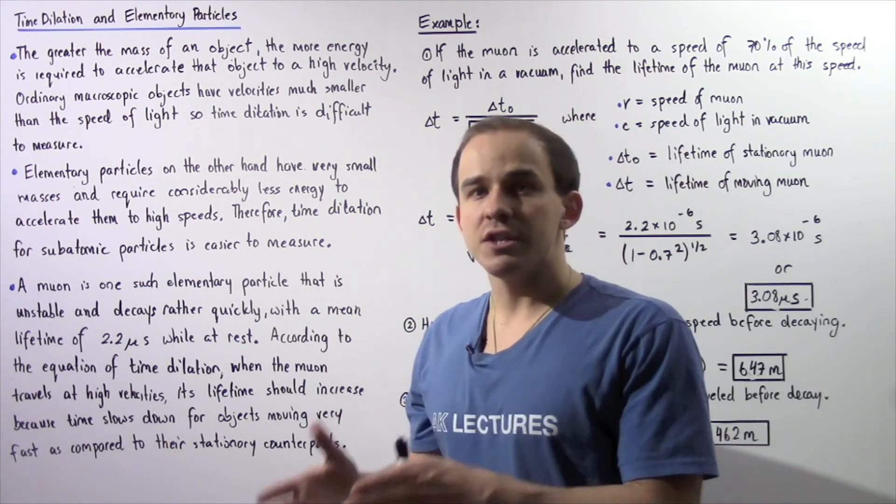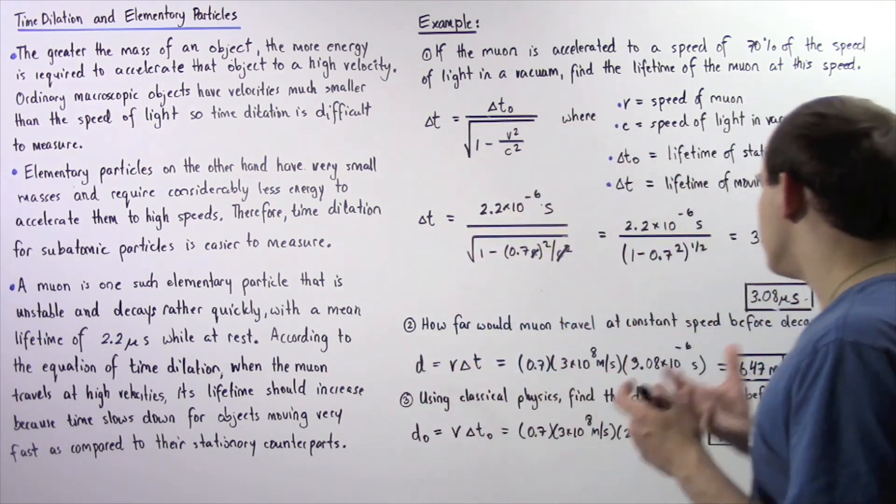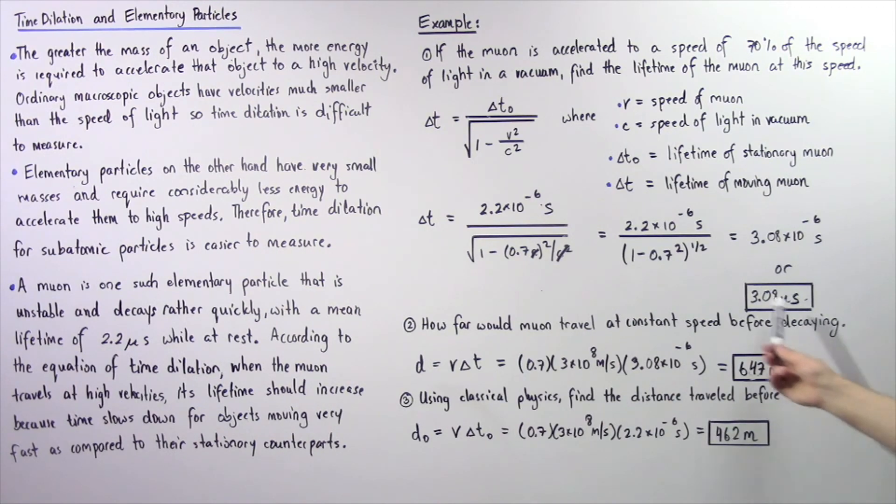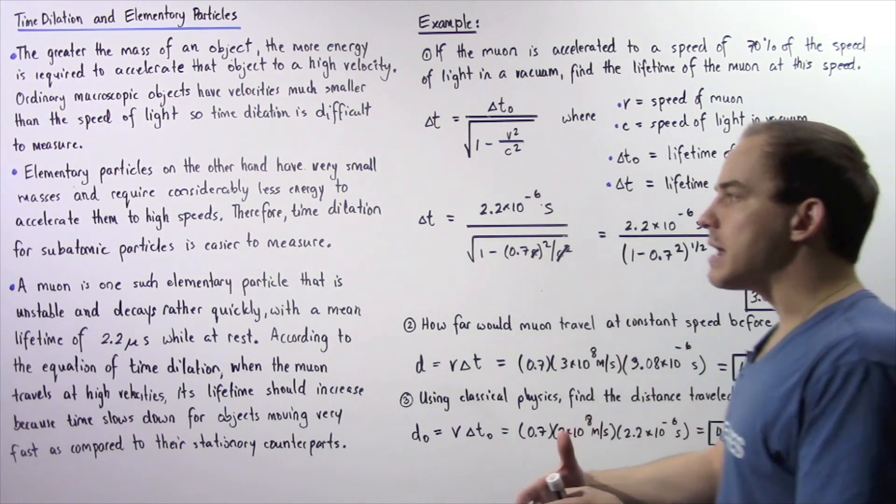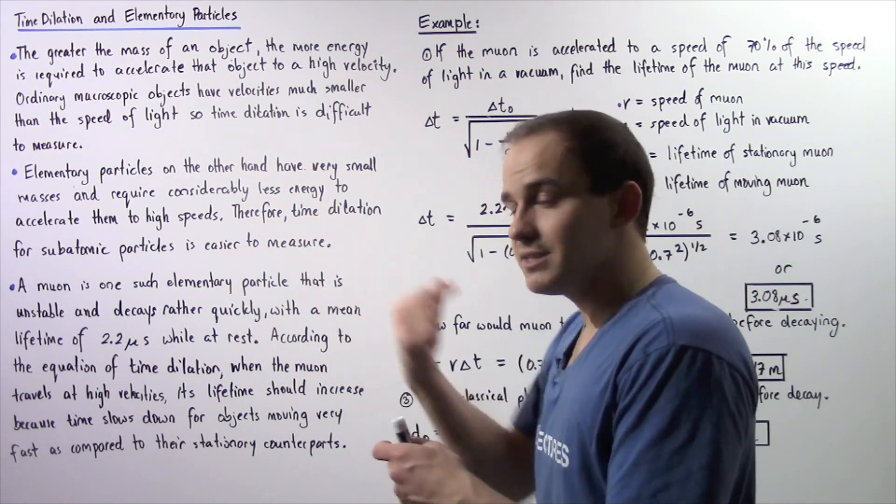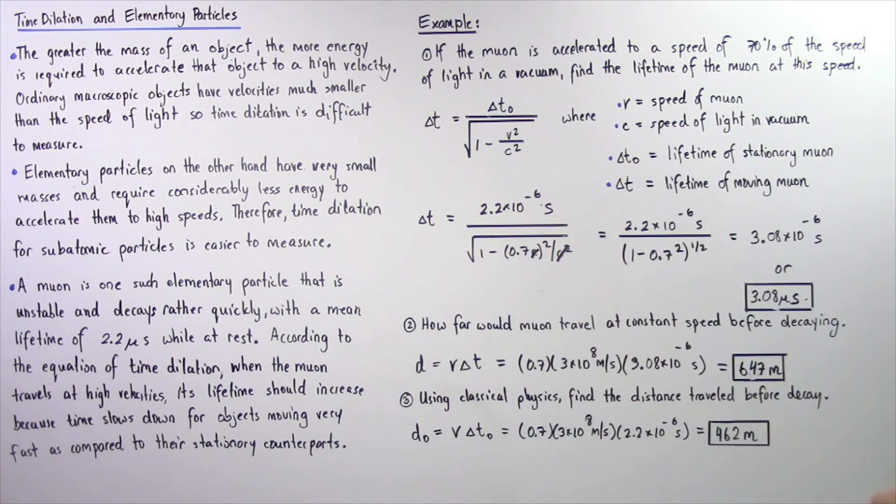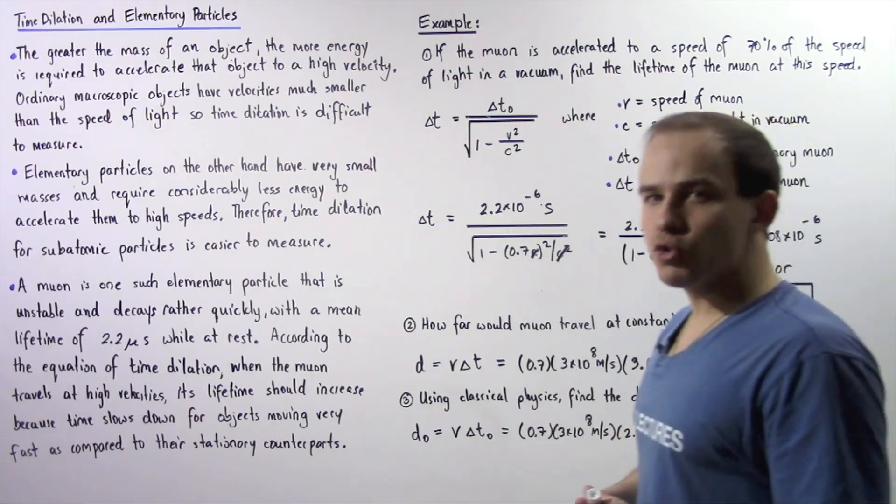So we see that classical physics gives us a distance that is less than our distance that is given by using the special theory of relativity. So basically because the lifetime of the particle increases as a result of time dilation, the distance it travels also increases.